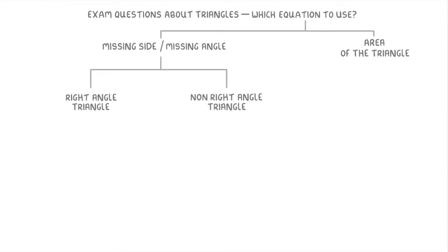Okay, so the first thing that you're going to have to think about is whether you're trying to find a missing side or missing angle, or trying to find the area of the triangle. If you're looking for a missing side or angle, then the next thing to think about is whether the triangle is a right angle triangle or a non-right angle triangle.